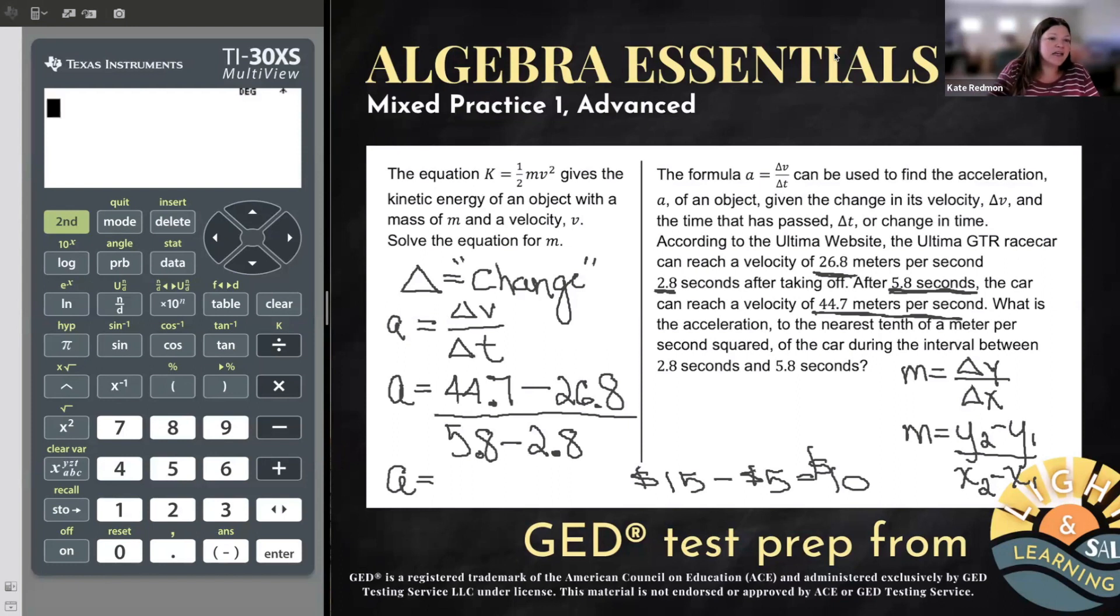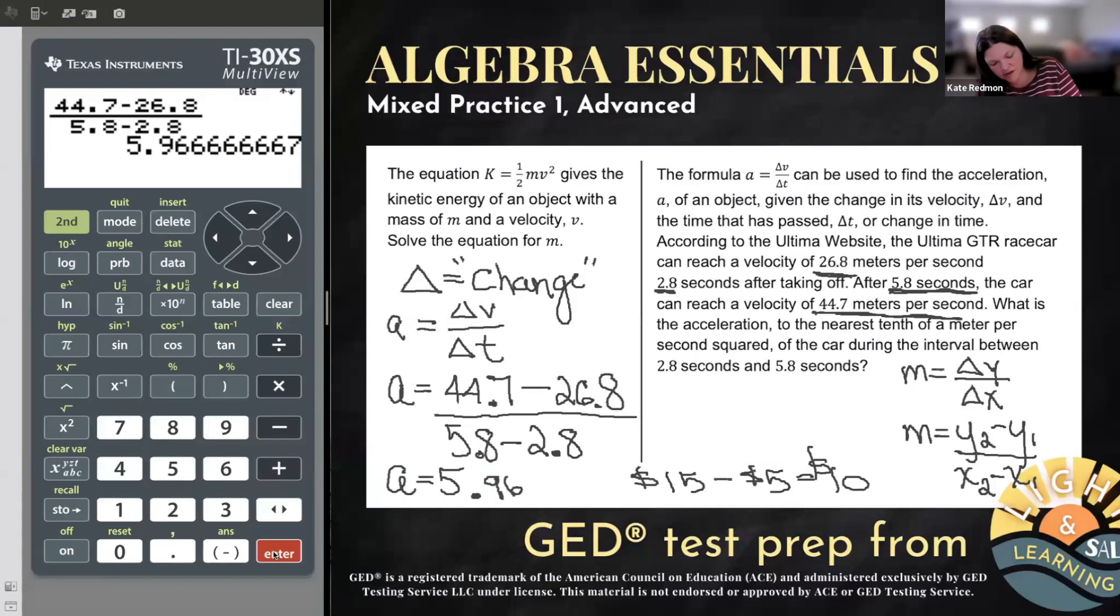And that will tell us how much the velocity's changed by. How much did it move? How much did it rise? And we'll do the same thing with time. The first velocity they gave us was what the car had reached after 2.8 seconds. The second velocity was after 5.8 seconds. So we'll take the new time, 5.8. We'll subtract the old time, 2.8. And then, nice, nice, nice. Even on the science test, you'll get a calculator. So I could type this entire thing in. Fraction bar first, 44.7 minus 26.8. And if you prefer to deal with the change in velocity first, and just simplify the top yourself, and then change in time on the bottom, and simplify the time yourself, you can do that. But 5.8 minus 2.8. And we get this 5.9666, yada, yada, yada. And now we have the acceleration.